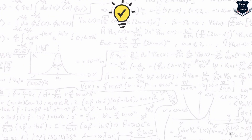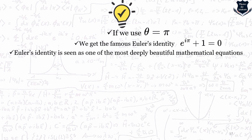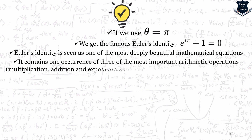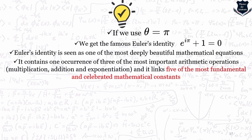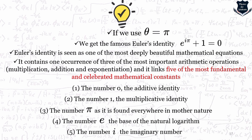There are certain facts which are very important and quite interesting. If we use θ = π in Euler's formula, we get the famous Euler's identity, which is one of the most important and deeply beautiful mathematical equations. It contains in one equation three of the most important mathematical operations and links five fundamental mathematical constants: the number 0 (additive identity), the number 1 (multiplicative identity), π found throughout nature, e the base of the natural logarithm, and i the imaginary unit. These five constants together illustrate how beautiful Euler's identity truly is.